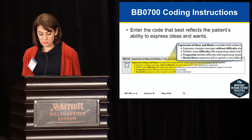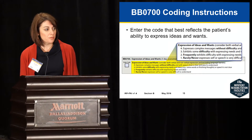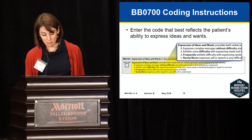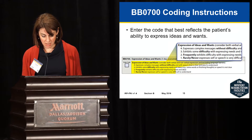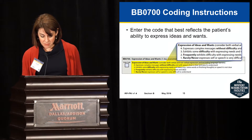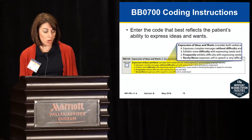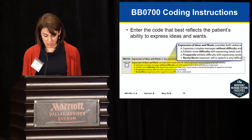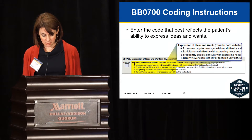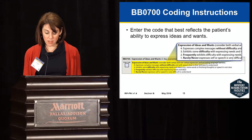Looking at BB0700, code 4 means the patient is able to express themselves without difficulty — they can express complex messages and their speech is easy to understand and clear. Code 3 means the patient expresses some difficulty; they may have word-finding problems or difficulty finishing thoughts, and speech may not be completely clear. Code 2 is frequently exhibits difficulty with expression. Code 1 is rarely or never — the patient is not able to express themselves or only able to do so rarely and is very difficult to understand.